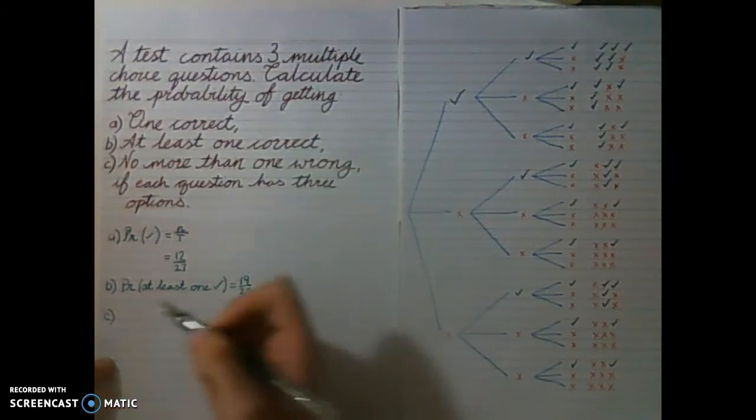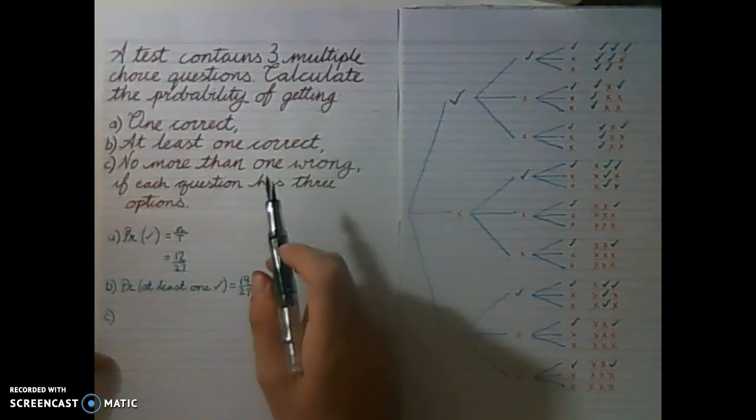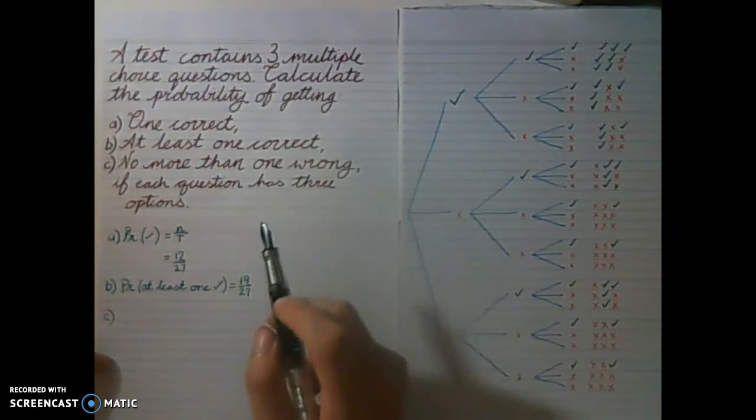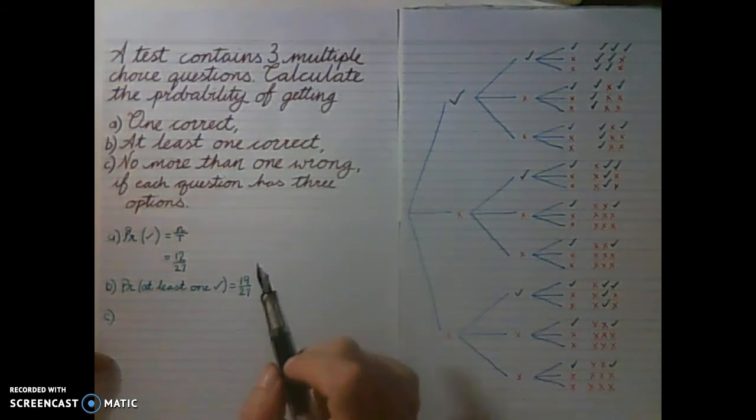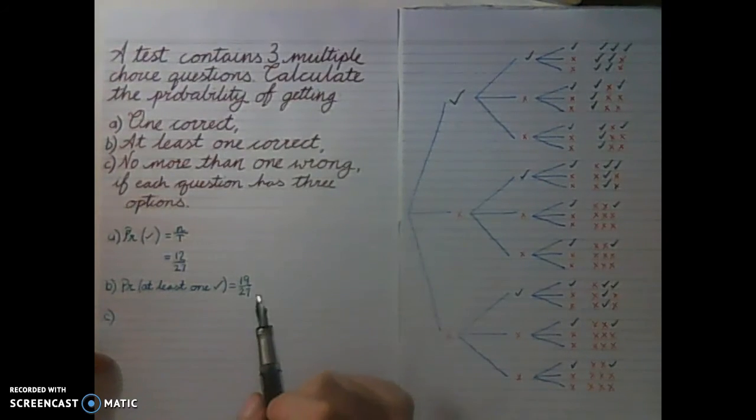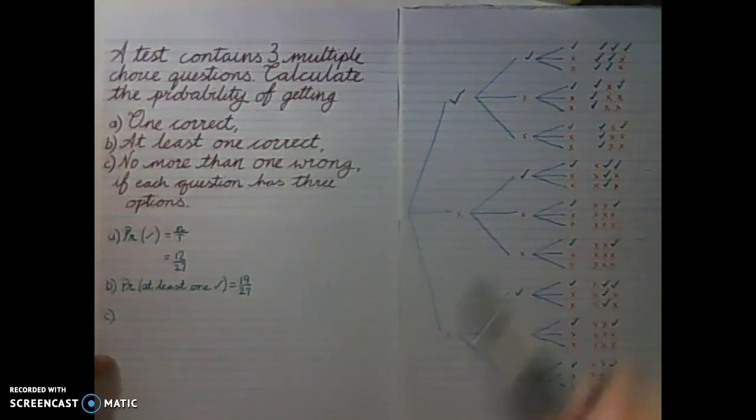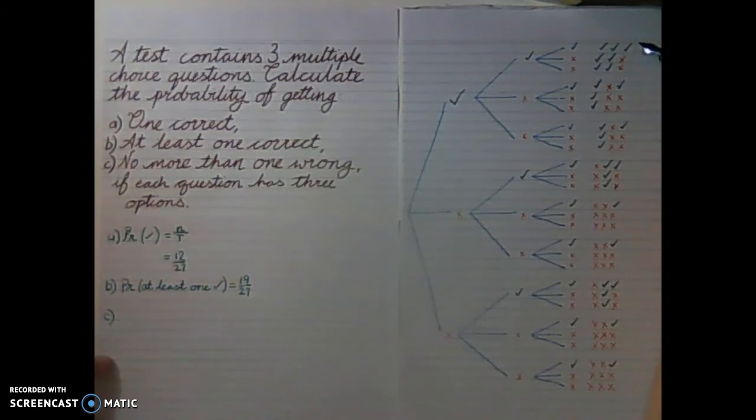Question C, we need no more than one wrong. So we're allowed at least one incorrect, but any more than that, and we will fail the questions.